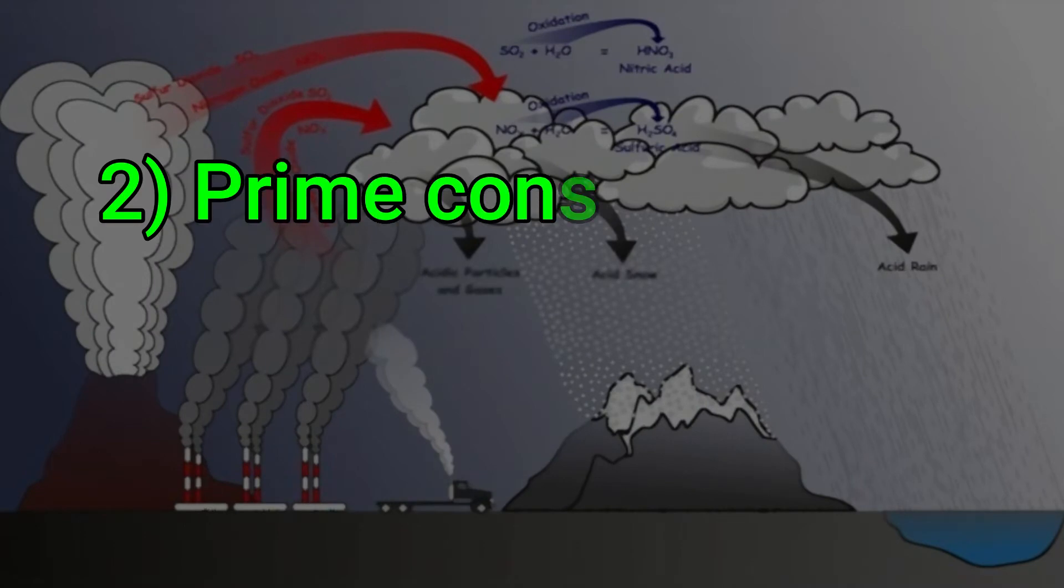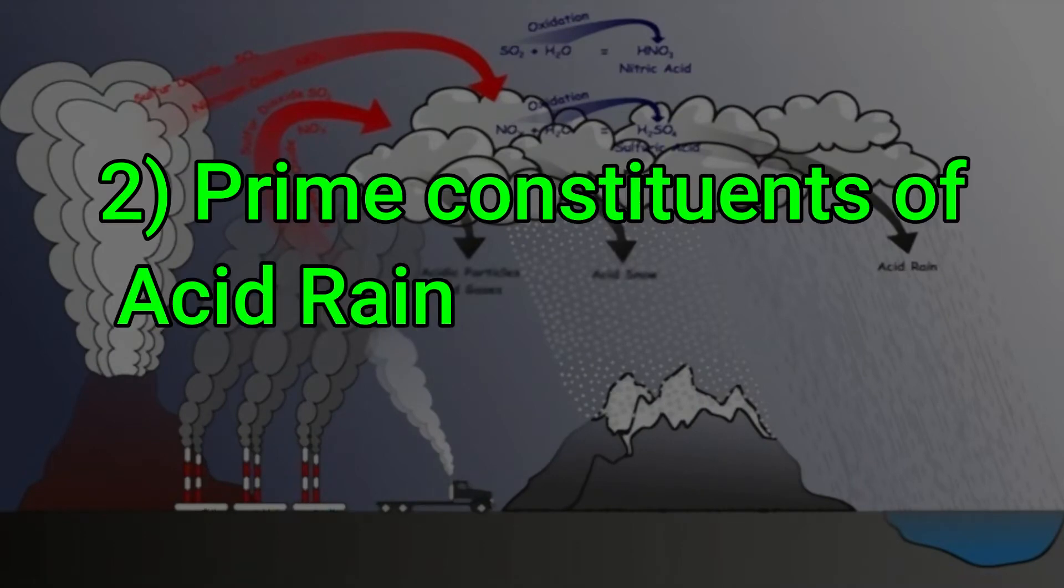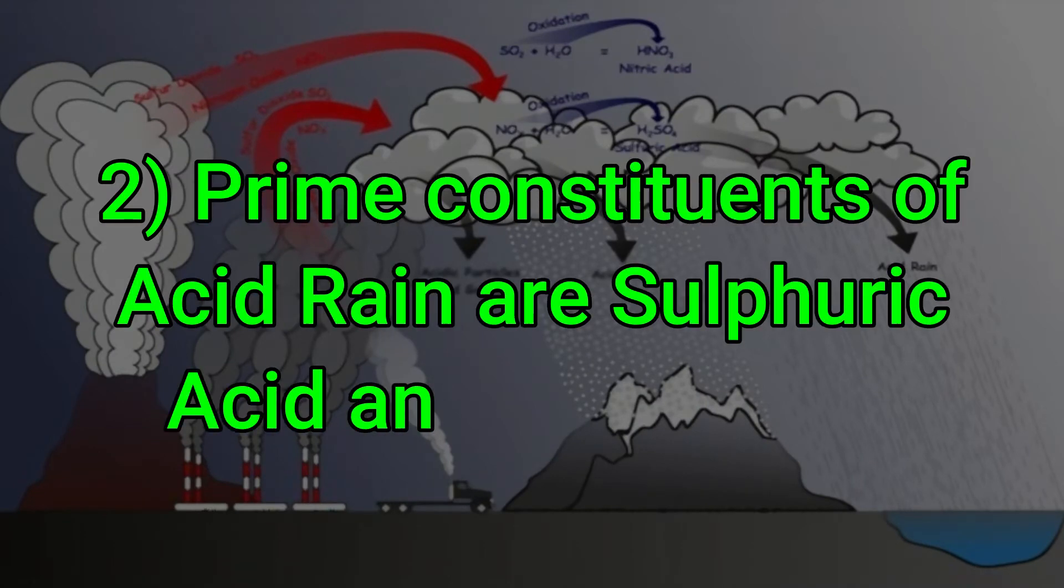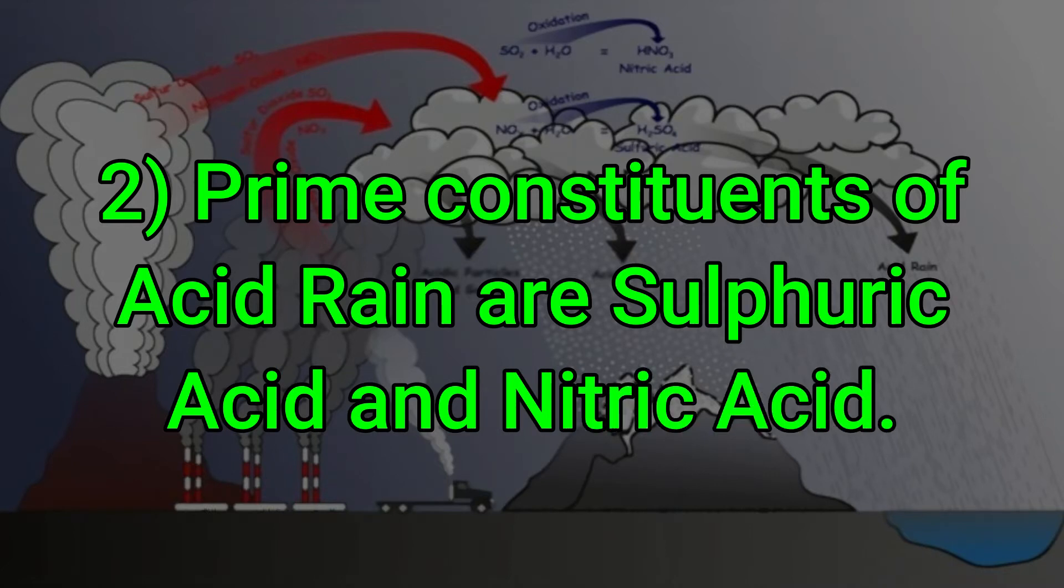Prime constituents of acid rain are sulphuric acid and nitric acid.